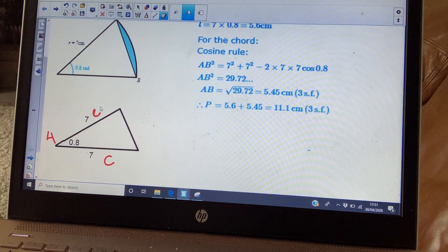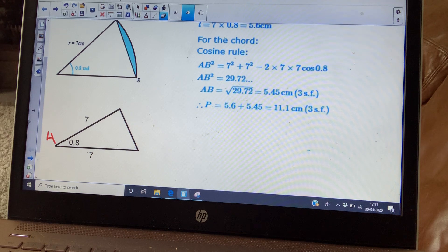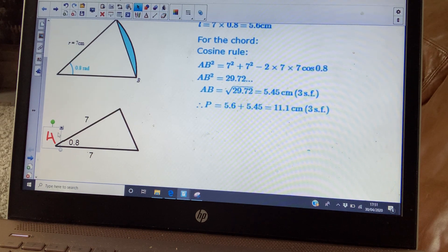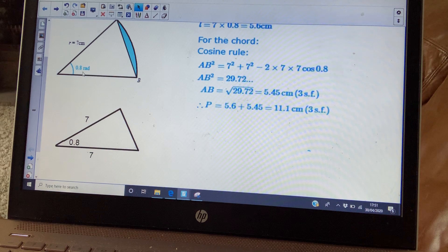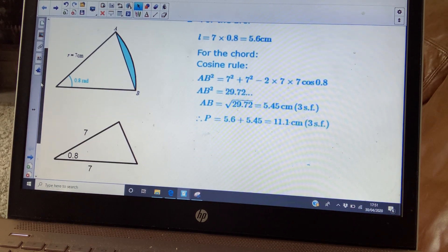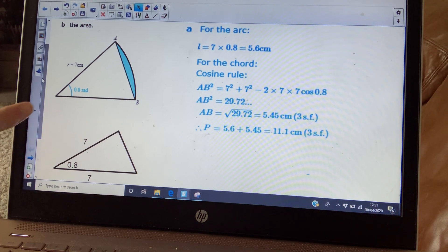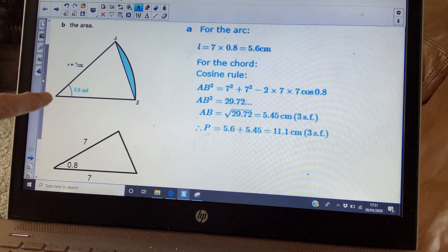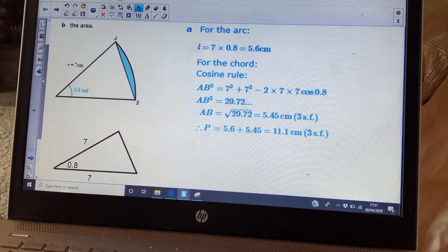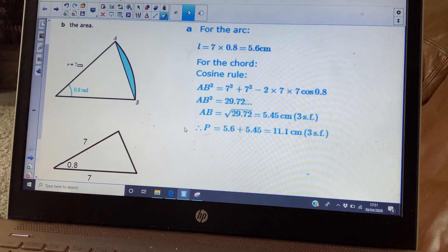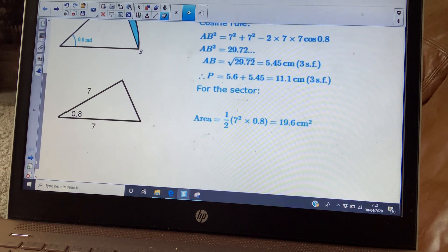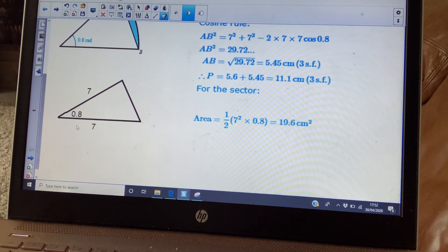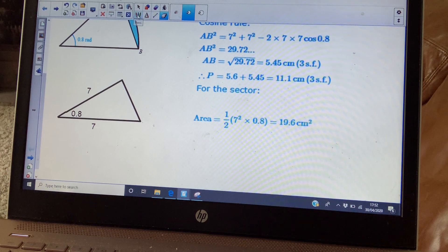So the perimeter of your segment is going to be 11.1 centimeters. The second question asks you to find the area of the segment. So for the area of the segment, what you're going to do is find the area of the sector and then subtract the area of the triangle. So the area of the sector is pretty straightforward.